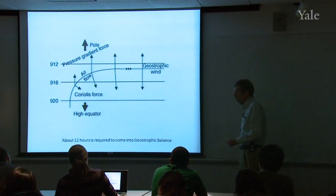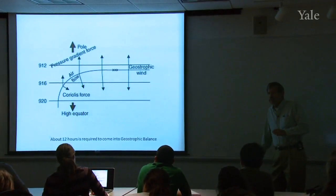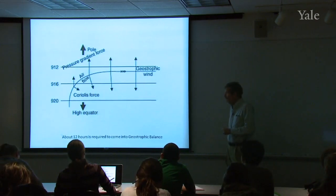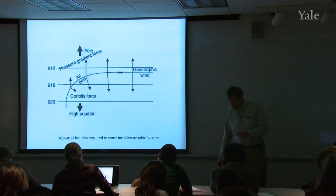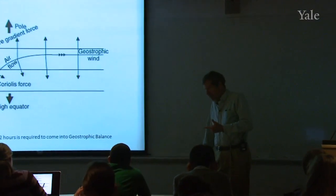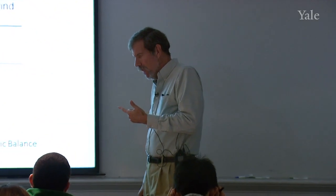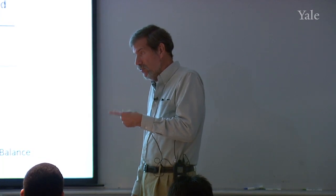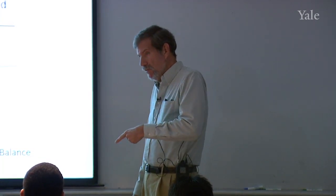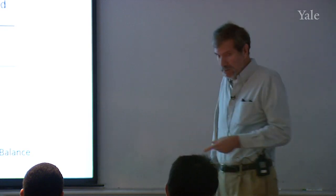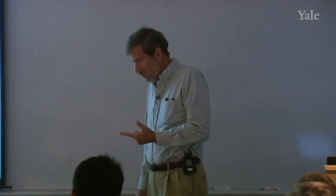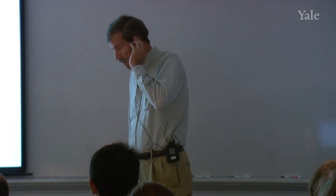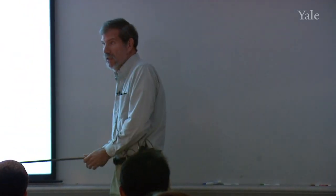The same thing happens in the oceans. The Coriolis force acts on ocean currents, and ocean currents are in an even more rigorous state of geostrophic balance than the atmosphere. These same principles apply to ocean currents as well. It's ironic that this Coriolis force, which is so small that we don't notice it in our everyday lives, has this kind of dominant effect on a larger scale.